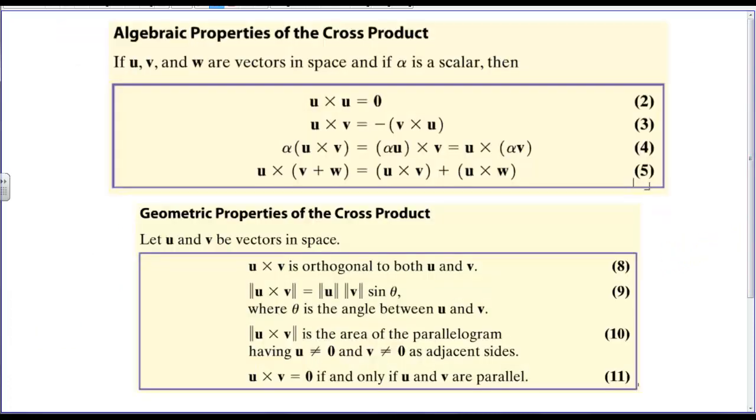Some properties of cross products are as follows. Anytime you take a cross of a vector in itself, you end up with 0. If you take and do a commutative property on a cross product, you get the opposite of that actual cross product. If I take a scalar multiple and cross two vectors, then that's the same as taking that scalar multiple times the first vector and then crossing it to the second. Likewise, I could take and multiply that scalar by the second vector and cross it with the first, but I can't distribute it through, if you will. The only thing I can distribute is the cross of the sum of two vectors. So, I could take u cross v plus u cross w.